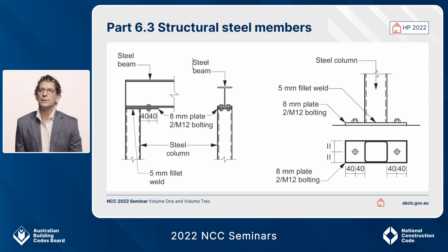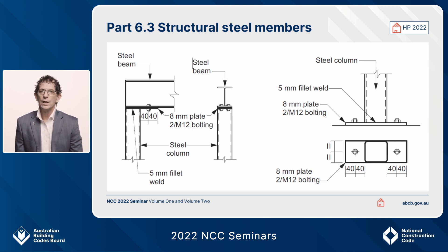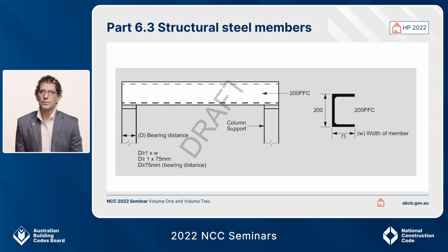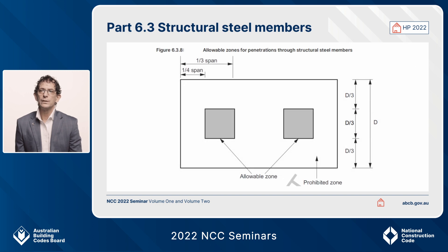We've also included details — and these are not the only details, we do have more, this is just an example — for the connection of steel beams to columns, including the required thicknesses and dimensions of plates, bolt sizes and bolt dimensions. We've got base plate connections to steel columns. We've also got details in explanatory information about the bearing capacities for different types of structural steel members onto columns, and we've set out some allowable zones and prohibited zones for penetrations through structural steel members for various services, be they plumbing, air conditioning, or whatever the case may be.